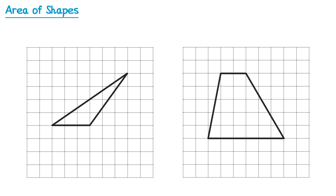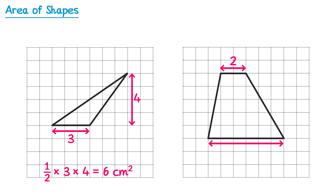Here are two more shapes for you to try and work out the area of on a grid. For the triangle, the base is 3cm and the perpendicular height is quite tricky to spot, but it's 4cm — remember it has to make a right angle with the base. So we would do one half multiplied by 3 multiplied by 4, which will give you 6cm squared. The next shape is a trapezium. The parallel sides are the top, which is 2cm, and the base, which is 6cm. The perpendicular height would be 5cm. So we use the formula: one half, inside a bracket we add A and B which is 2 and 6, and then multiply by the height which is 5. If you work this one out, you should get 20cm squared.